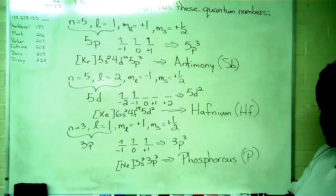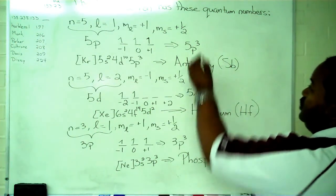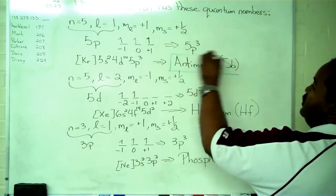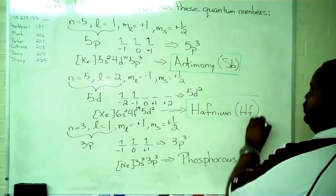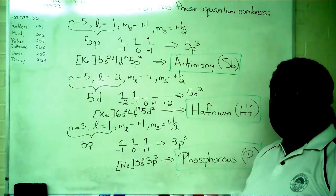And so this shows us how it is possible to take the quantum numbers and actually determine the identity of an element by working through the steps.